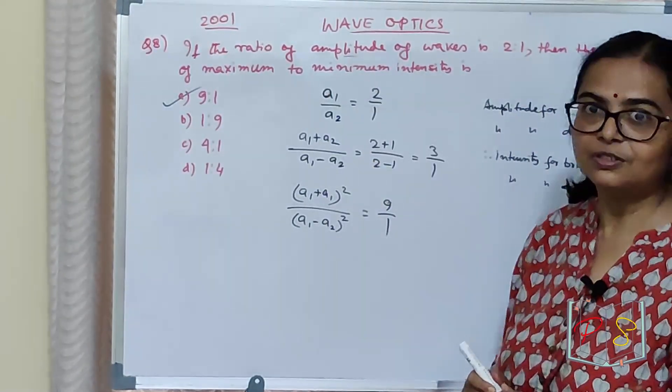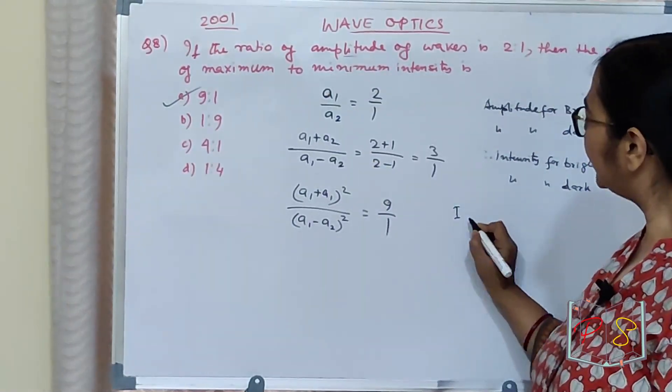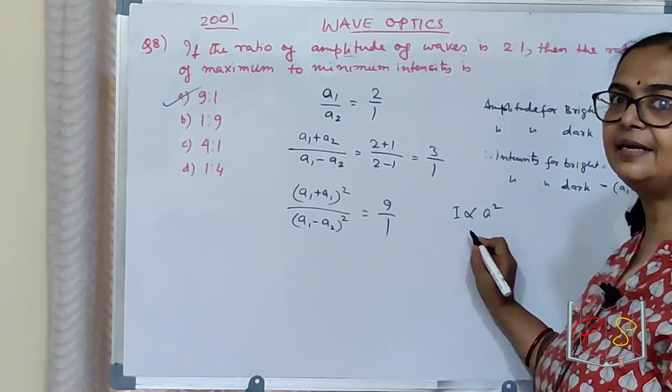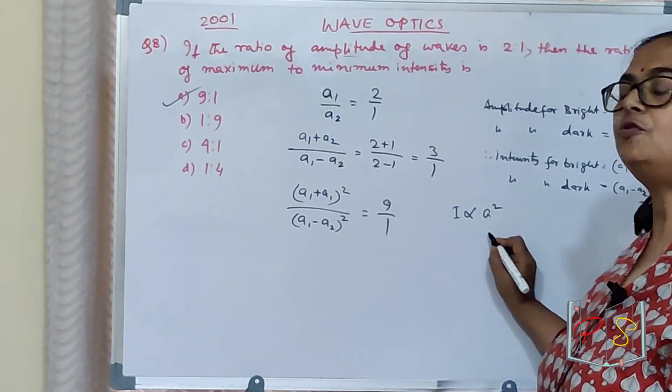Which principle did we use? Intensity is proportional to A squared. Intensity is proportional to amplitude square.